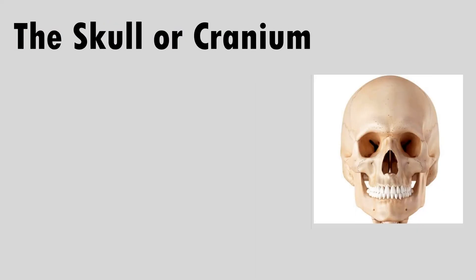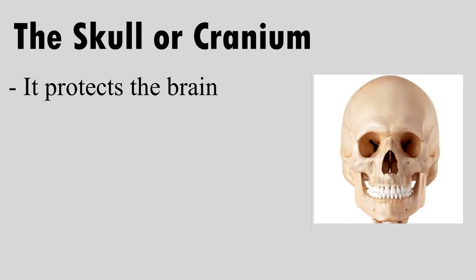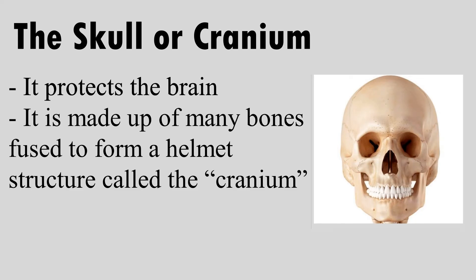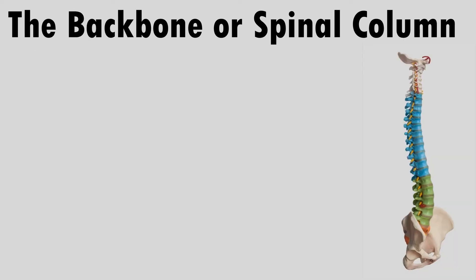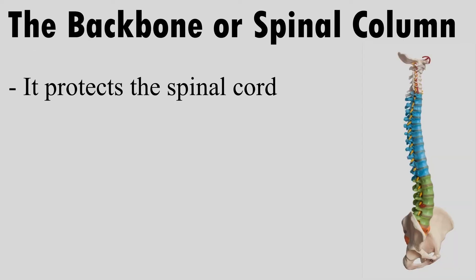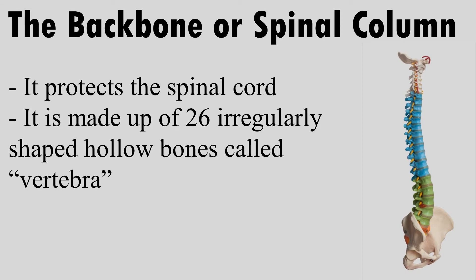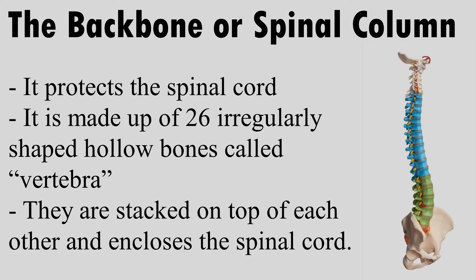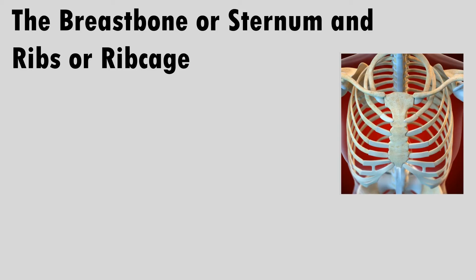The skull or cranium protects the brain. It is made up of many bones fused to form a helmet structure called the cranium. The backbone or spinal column protects the spinal cord. It is made up of 26 irregularly shaped hollow bones called vertebrae.